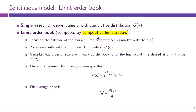In contrast to before, where we had one representative dealer implicitly competing with others, for the Glosten model it will be more illustrative to explicitly think of many limit traders each submitting a limit order for one unit of the asset. We will just look at one side of the market — the ask side with limit orders to sell and market orders to buy — since the other side is completely symmetrical.